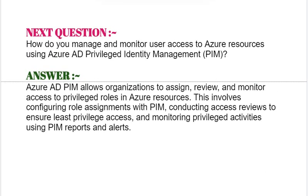Next interview question: How do you manage and monitor user access to Azure resources using Azure AD Privileged Identity Management (PIM)? Your answer should be: Azure AD PIM allows organizations to assign, review, and monitor access to privileged roles in Azure resources. This involves configuring role assignments with PIM, conducting access reviews to ensure least privileged access, and monitoring privileged activities using PIM reports and alerts.